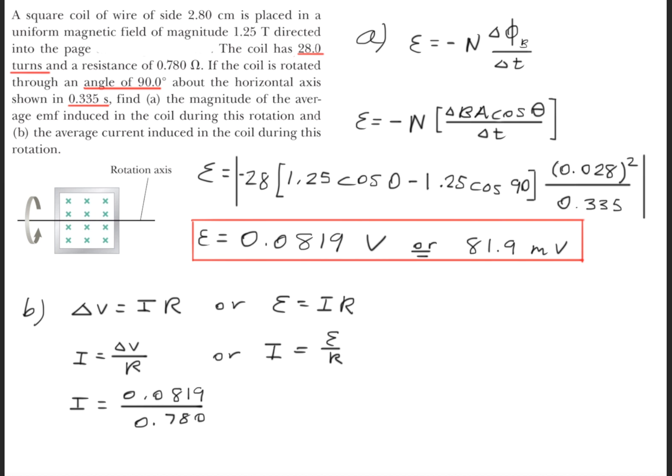Now we'll go ahead and solve for I, and then we'll take what we got from part A and we'll divide it by the resistance, which was 0.780 ohms. We'll get that the current is equal to 0.105 amps, or we can write that as 105 milliamps.